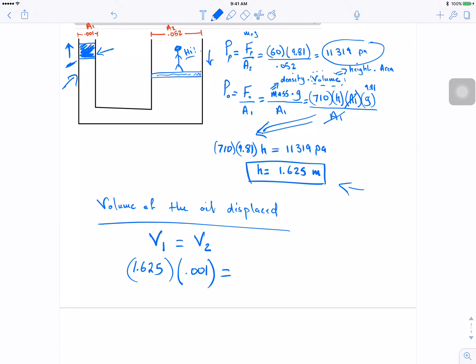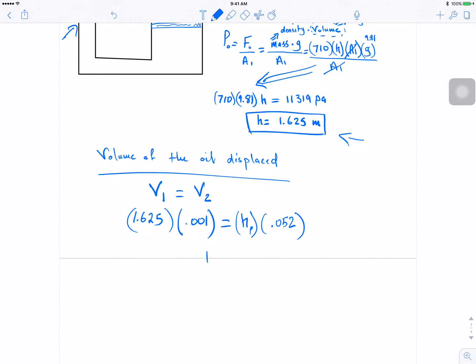It's going to equal to the height we're looking for, how much it went down. So let's go height, like the large person or height person, times 0.052. And for this guy H, I got 0.03125 meters.